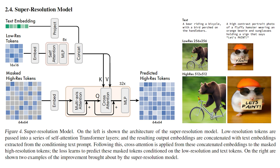Following this, cross-attention is applied from these concatenated embeddings to the masked high-resolution tokens. The loss learns to predict these masked tokens conditioned on the low-resolution and text tokens.